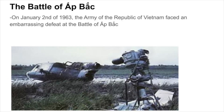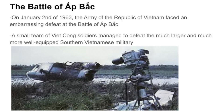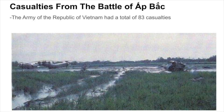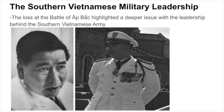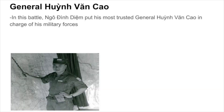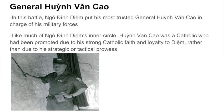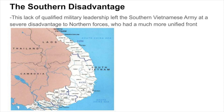On January 2nd of 1963, the Army of the Republic of Vietnam suffered an embarrassing defeat at the Battle of Atback, when a small team of Viet Cong soldiers defeated the much larger, better-equipped Southern Vietnamese military. The Army of the Republic of Vietnam had 83 casualties, while the Viet Cong had only 18. This defeat highlighted a deeper leadership issue: Diem had placed his most trusted general, Huynh Van Cao, a Catholic promoted for his loyalty rather than tactical prowess, in command, leaving the Southern Vietnamese Army at a severe disadvantage.